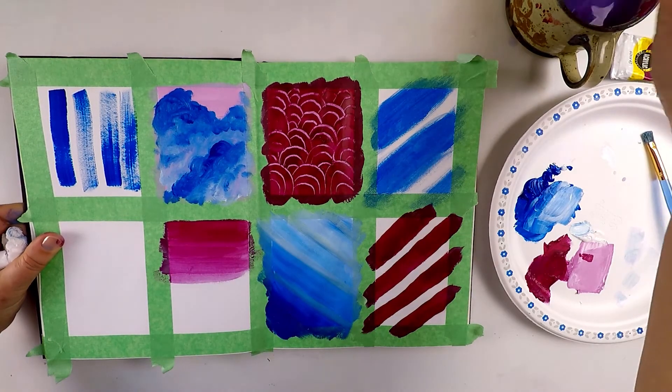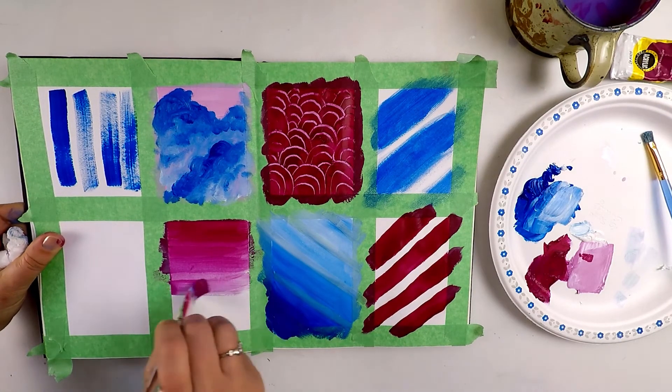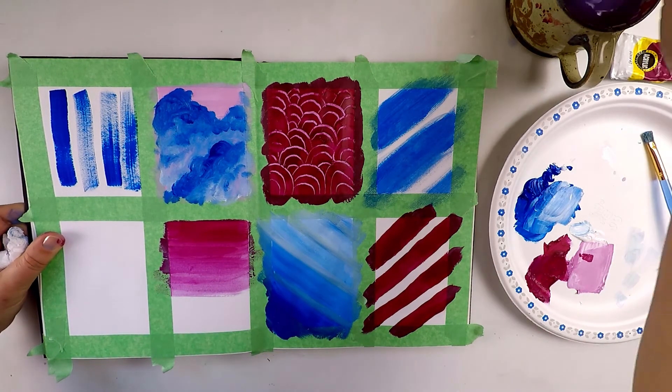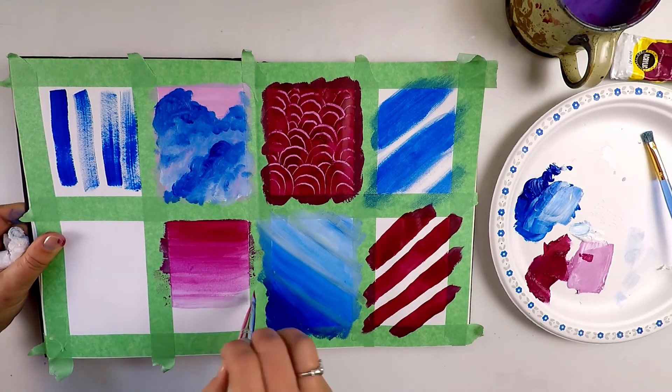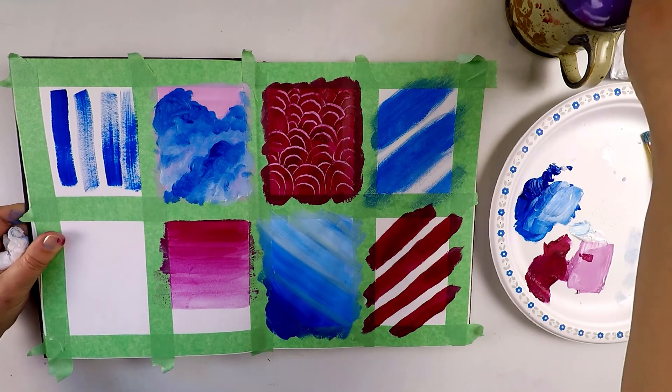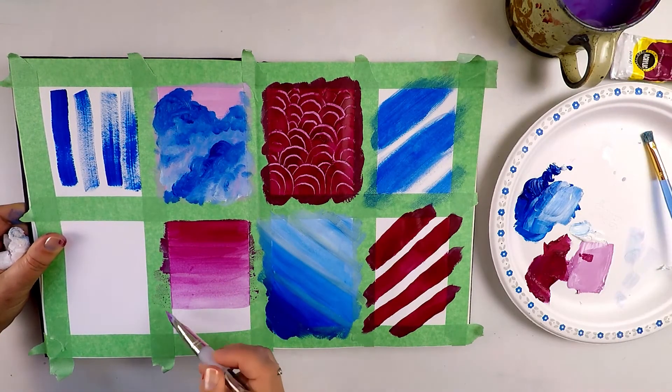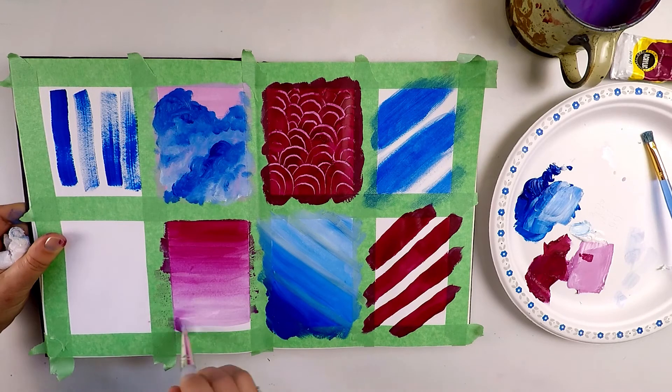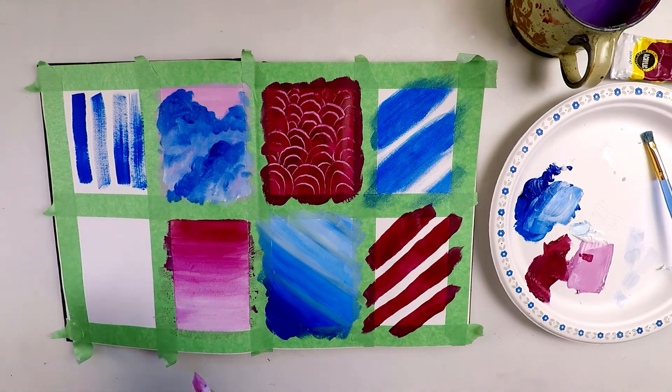Here I'd like you to try to make a gradient where you start with the paint from the palette right onto the paper and then instead of dipping your brush back into more paint gradually rinse it off. Use your paper towel and pull some of the paint off so that it becomes transparent.